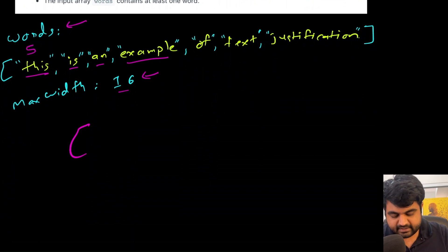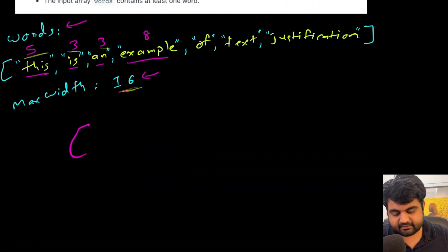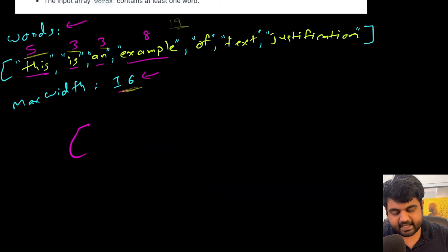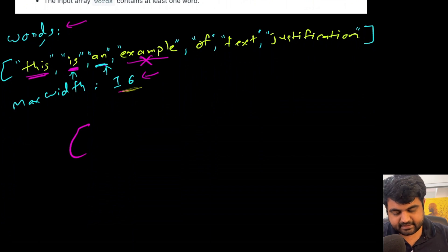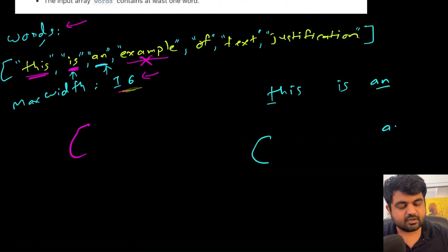Summing the first three words with their space offsets gives 11. Adding 'example' (eight) gives 19, which exceeds 16, so we cannot include 'example' on this line. We are only working with the first three words: 'this', 'is', and 'an'. The first word starts the line and the last word must be 'an', with no trailing space after it.